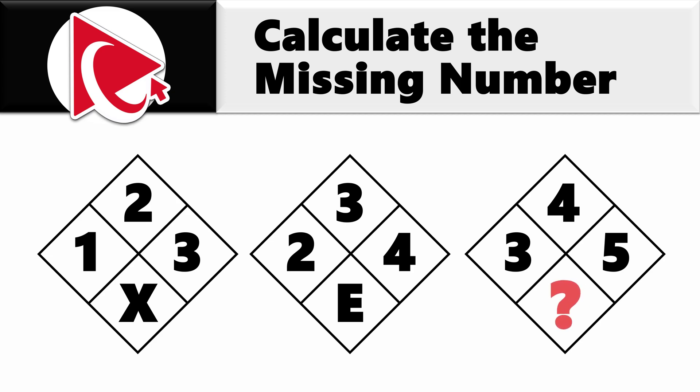What's interesting here is that if you also look across each diamond, you see the pattern clockwise. In the first diamond the pattern is 1, 2, 3 and then comes the letter X. In the second diamond there might be a pattern 2, 3 and 4 and then comes the letter E.